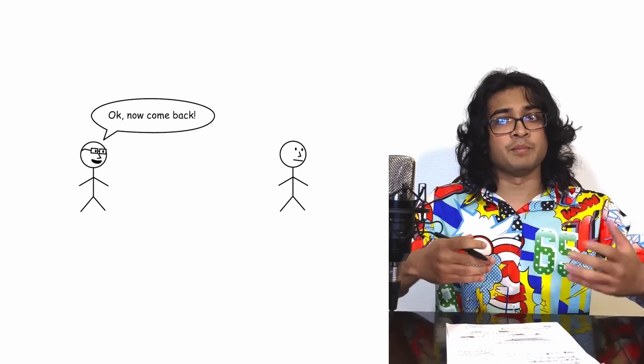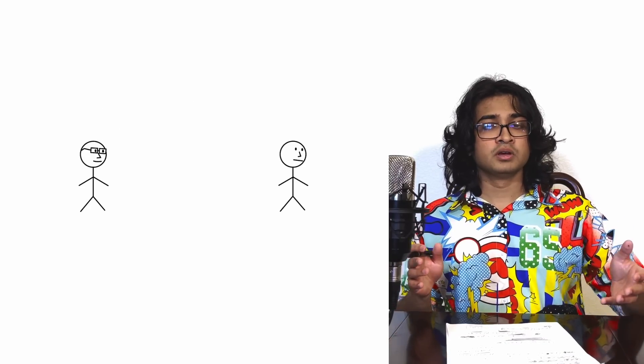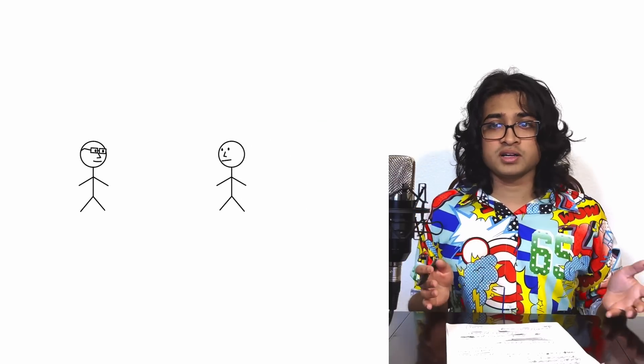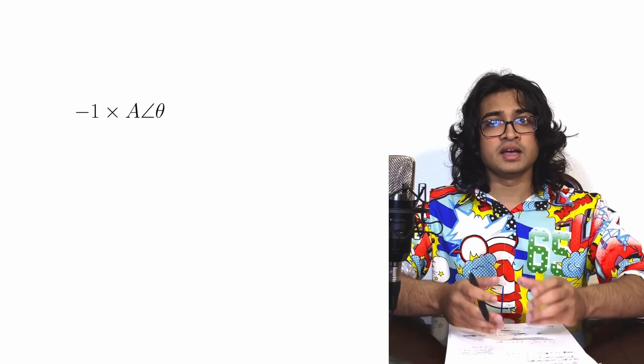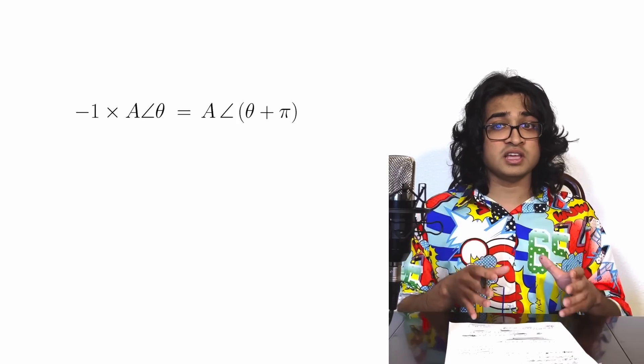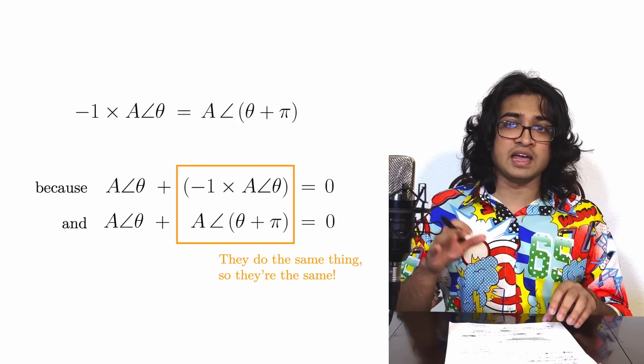Let's think about that intuitively. Remember that you can think of a polar object as telling you how far to walk and in what direction. The negative of a polar object should be something that cancels it out, meaning that if you follow the directions of the original polar object and then you follow the directions of its negative, you should end up back where you started. Well, let's say that I made you walk 10 paces in some arbitrary direction and then I said to come back to where you started. What would you do? Well, you'd turn around 180 degrees and then just walk 10 paces again. So basically, negative 1 times A angle theta and A angle theta plus pi are the same object because they both cancel out A angle theta.